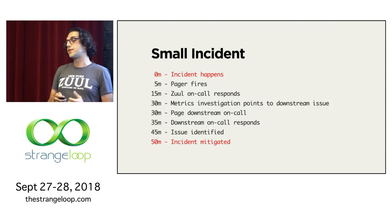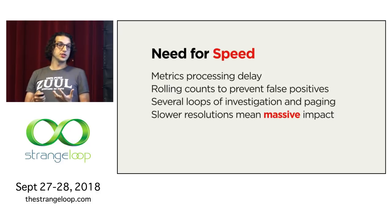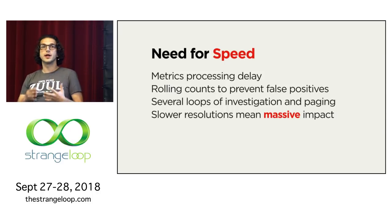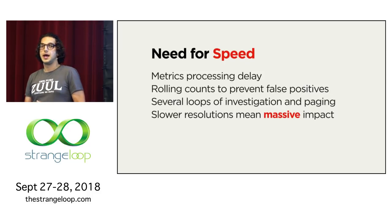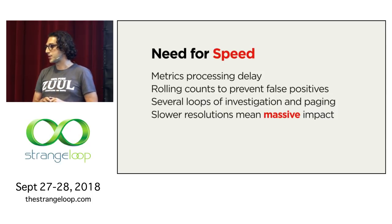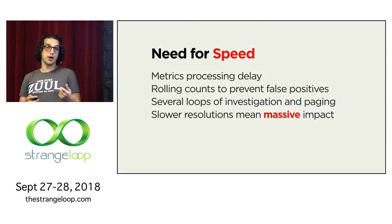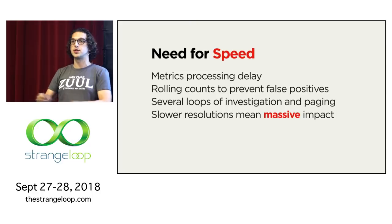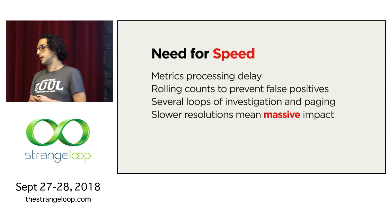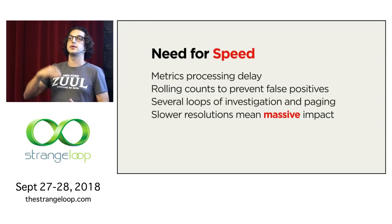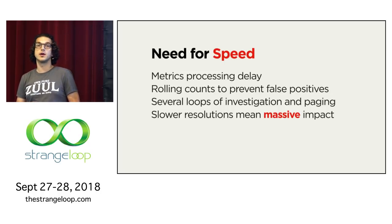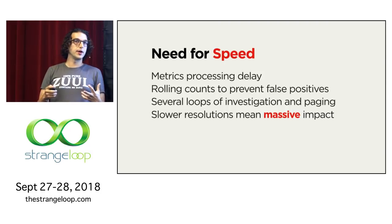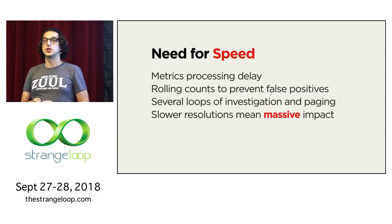Speed when resolving these incidents is very critical. Most metrics collection solutions, like time series databases, are solving a very comprehensive problem for the whole company and tend to be pretty slow. At Netflix, we're processing about a billion metrics per minute. When events happen, it takes at least five to ten minutes for those metrics to catch up. We also use rolling counts on alerts so we don't get false positives — for example, you want to see the threshold crossed nine out of the last ten minutes before sending an alert. Each time you page another team, you create that loop, and all these things put together mean much slower resolutions with massive impact.